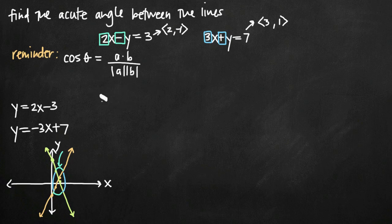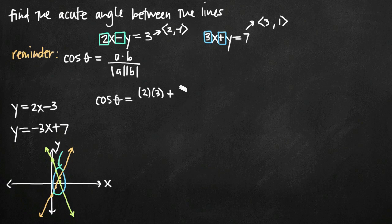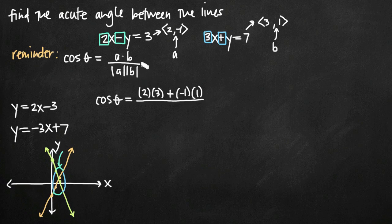Applying the formula, cosine of theta equals the dot product of a and b. The dot product means multiplying corresponding components and summing them. We multiply the x-components: 2 times 3, then add the product of the y-components: negative 1 times positive 1. In the denominator, we use the distance formula to find the magnitude of a and b.